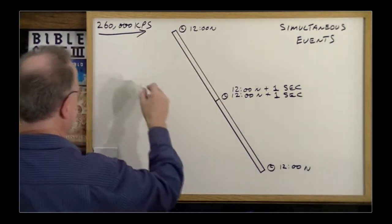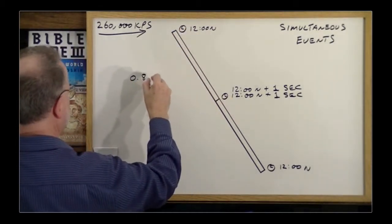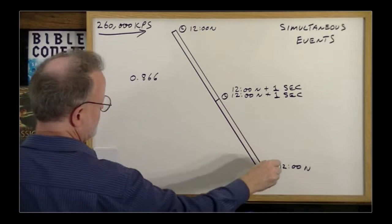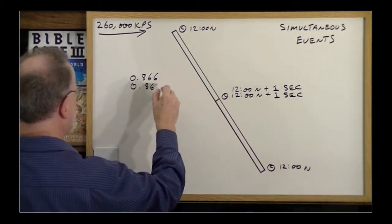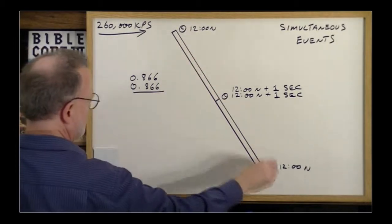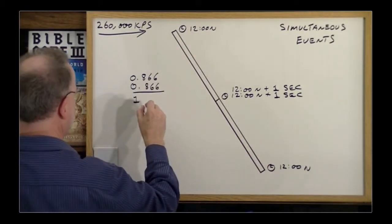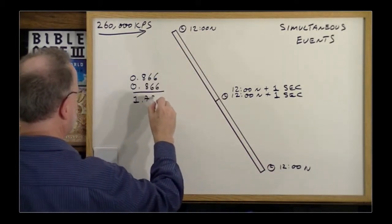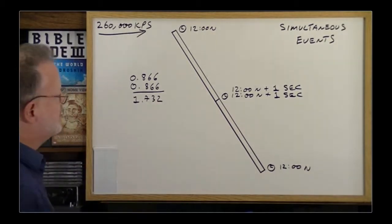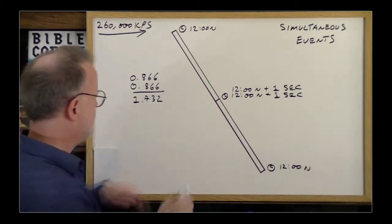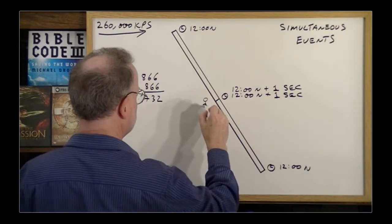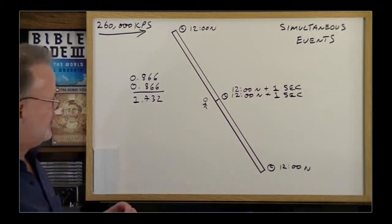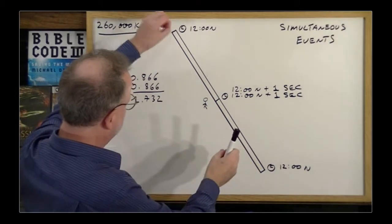So even though this clock is ahead of this one by 0.866, and this one is lagging behind the middle clock by 0.866, thus the total difference between the two is 1.732. If you have someone at the middle here, Mr. Observer, he would see the two bursts of light, boom, boom,